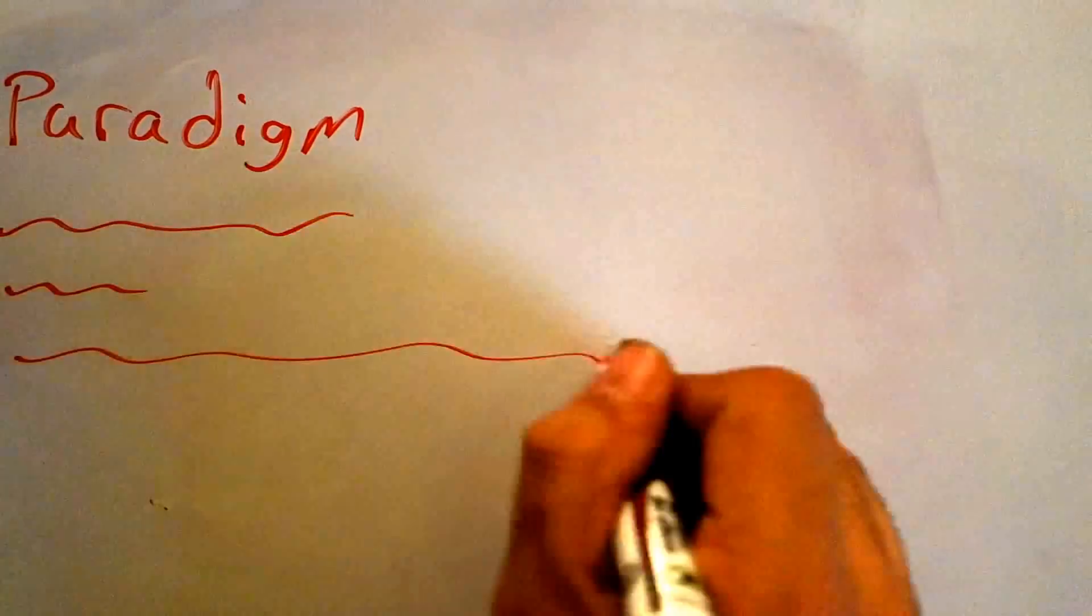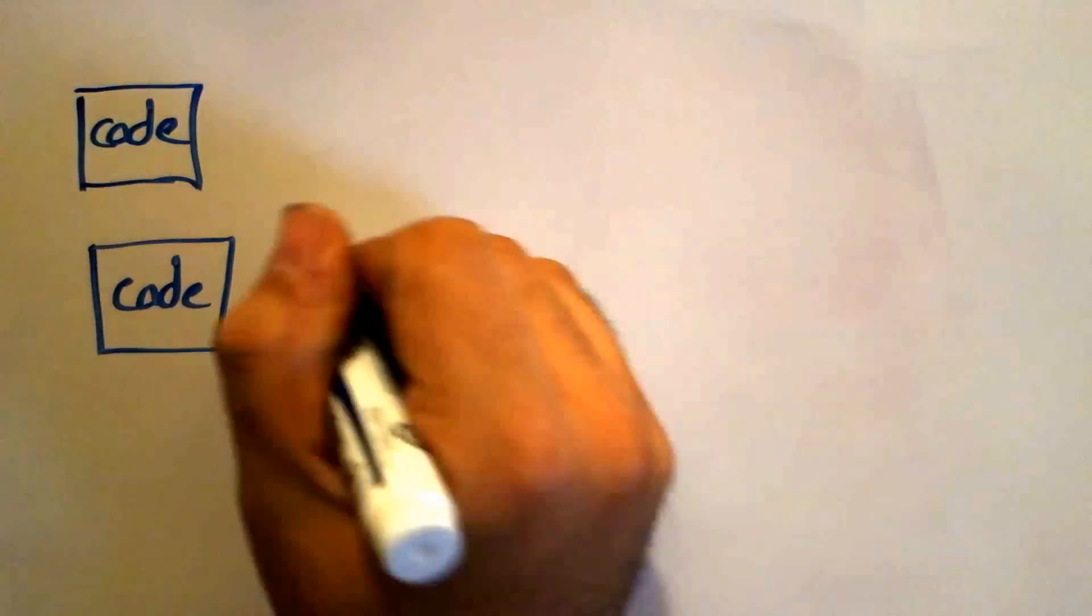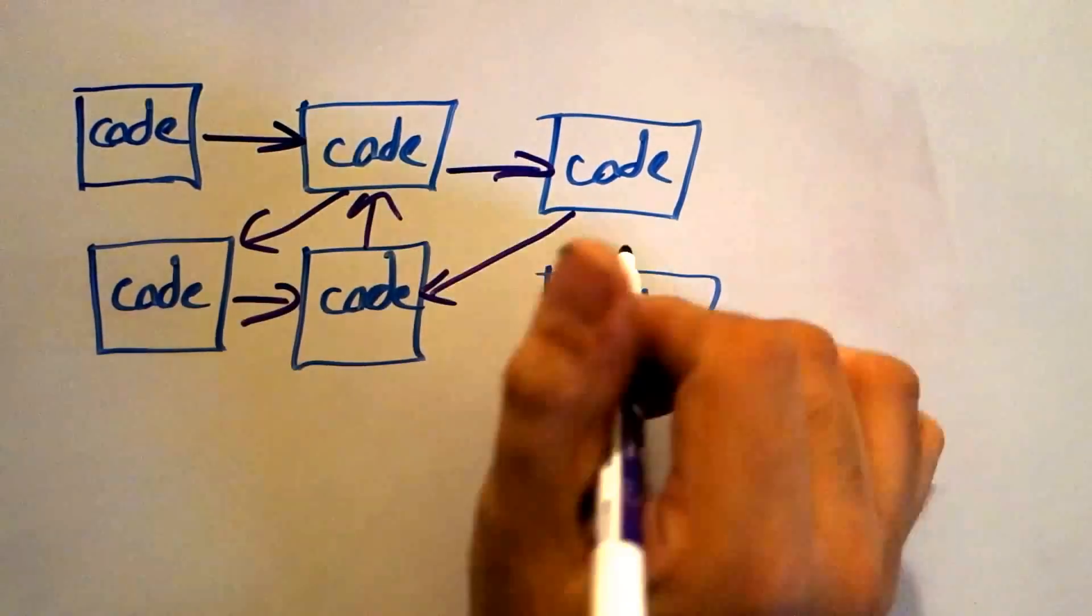The paradigm does not describe how the code is written, but how the code is structured. So we can only tell what paradigm a piece of code is using if we can understand the structure of the code.